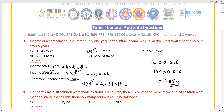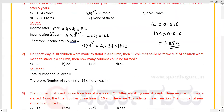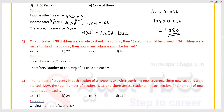See the second problem: on sports day, if 30 children were made to stand in a column then 16 columns could be formed. If 24 children were made to stand in a column, then how many columns could be formed? First, find out the total number of children. There are 16 columns with 30 children each.